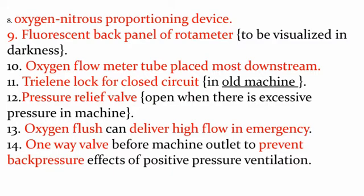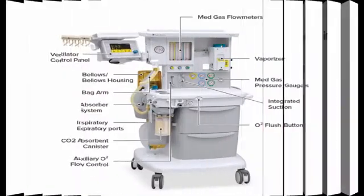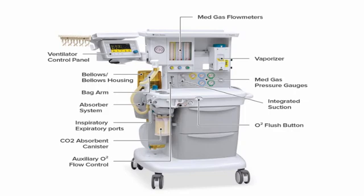I will also show you the anesthesia machine. The remaining points include: nitrous oxide proportional device, fluorescent back panel of rotameter, oxygen flow meter tube placed most downstream, and spare flow controls. These 14 points are very important, and if I read them you can understand, and you can also understand by yourself.